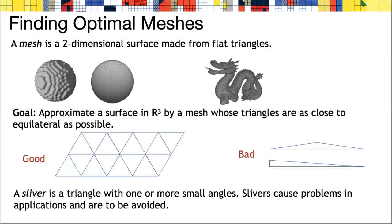What we'd like to avoid are sliver triangles with very small angles, such as the kind that you see at the right. Slivers cause a lot of problems in applications, such as in finite element methods or computer graphics, so we'd like to avoid them.